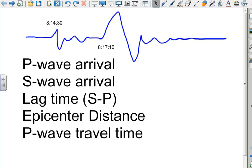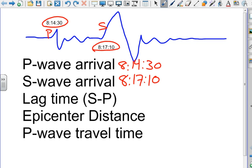And here we go. This blue line here represents where a P wave arrives and then we wait and the S wave arrives. I've given the times here so we can copy those down. The P wave arrival time is 8:14:30, and the S wave arrival time is 8:17:10.